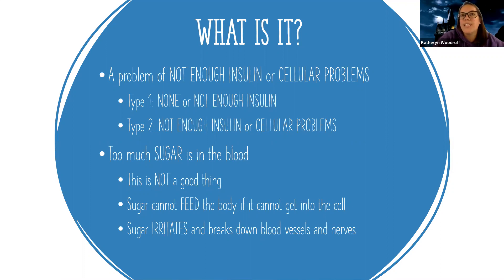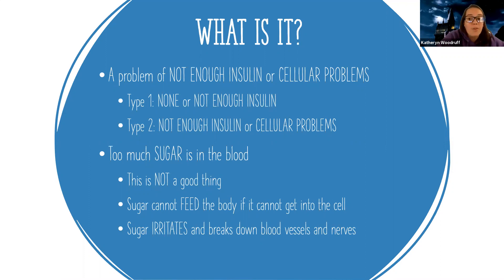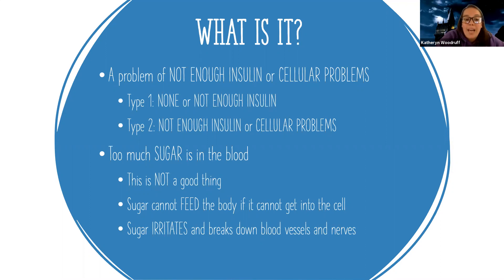The cells get less sensitive to insulin — in other words, the key that insulin is bringing to the cell is not opening the door. So what ends up with both type one and type two is there's too much sugar in the blood. Sugar in the blood is not actually feeding the body — it's just traveling and causing damage.